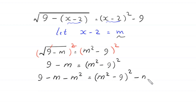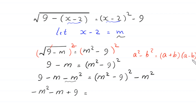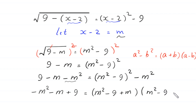Rearranging, we write negative m squared minus m plus 9 equals (m squared minus 9) whole squared. Applying the difference of squares identity, a squared minus b squared equals (a plus b)(a minus b), the right-hand side becomes (m squared minus 9 plus m) times (m squared minus 9 minus m).